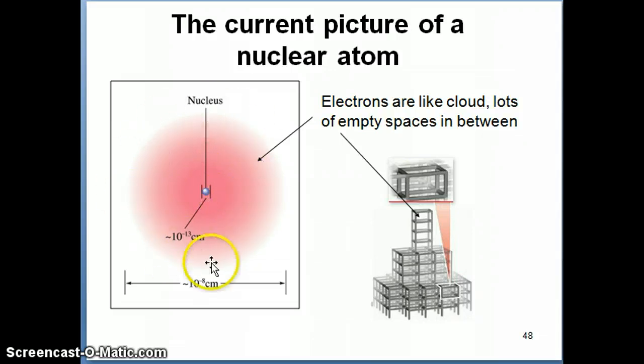Within it you have a nucleus, which is composed of the protons and neutrons. Electrons are like clouds, lots of empty spaces in between the electrons. The sizes of the nucleus compared to the size of the atom is shown here in terms of diameter. If you think about diameter of the nucleus, it's about a hundred thousand times less than the diameter of the atom if you compare the sizes of these two numbers here.